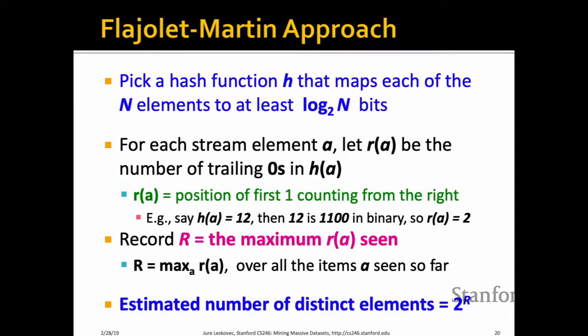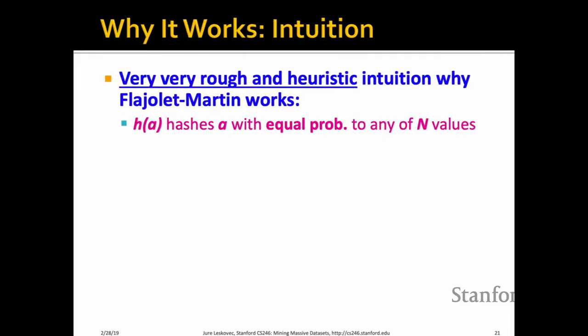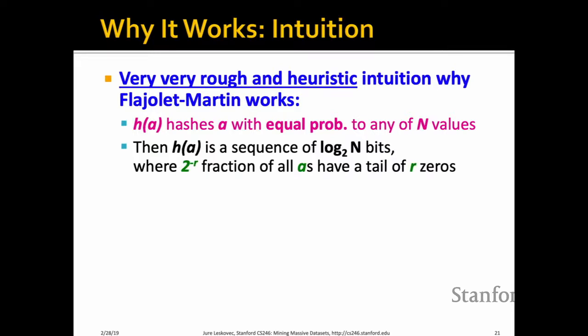The estimate: after processing the stream, find the maximum tail of zeros R seen so far, and estimate the number of distinct elements as 2^R. The algorithm is: elements come in, hash each one, represent in binary, note the trailing-zero length, keep doing this. When asked how many distinct elements there were, report 2^R where R is the longest tail of zeros seen. This will almost always be correct.